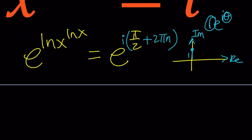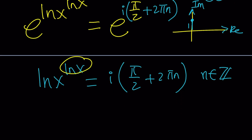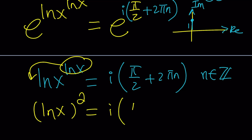So now we have the base e on both sides, so we can go ahead and focus on the exponents. We get ln x times ln x, which is (ln x)² equals i times (π/2 + 2πn). Using the rules of exponents, we move the exponent down: (ln x)² = i·(π/2 + 2πn). We have something squared equals i times something — how nice is that.